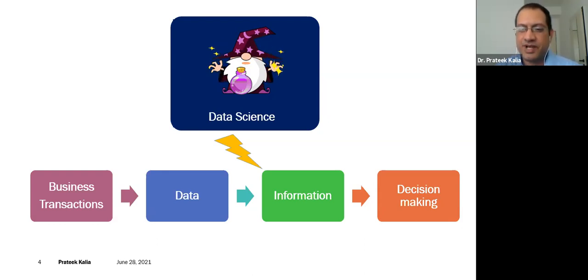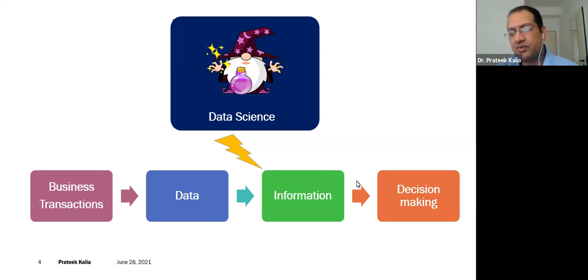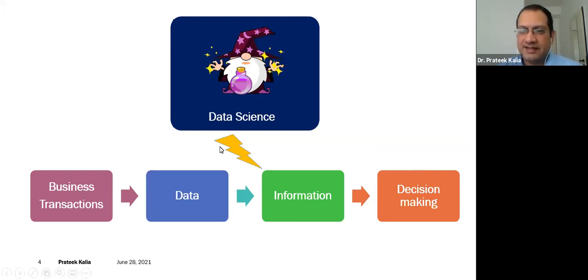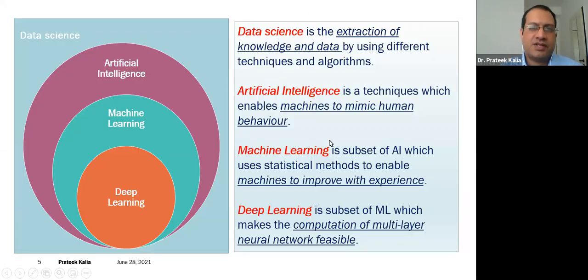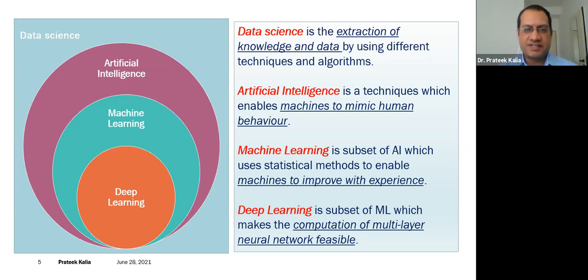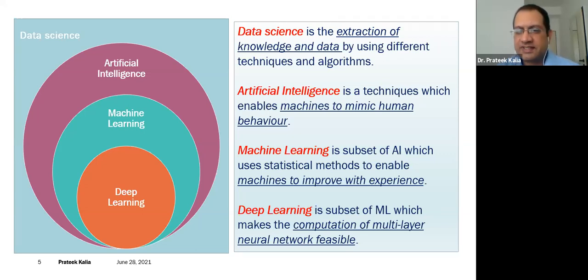A lot of business transactions mean a lot of data, and with the help of data science we can convert this information into useful decision-making inputs. Data science is the extraction of knowledge from data using different techniques and algorithms. It has different subsets — the first is artificial intelligence, which I will talk about in detail in subsequent slides, and it is essentially about how machines mimic human behavior.